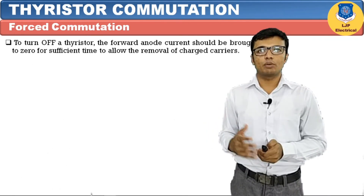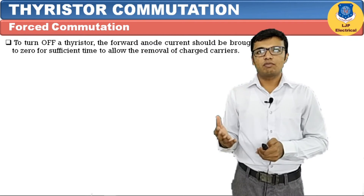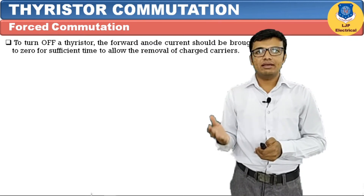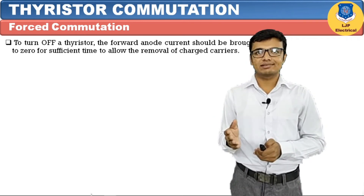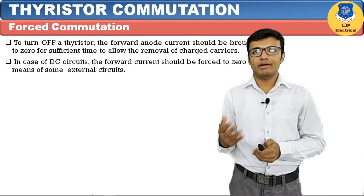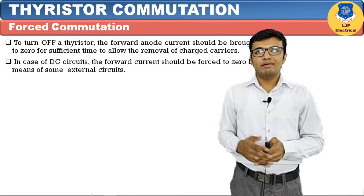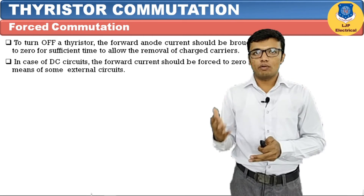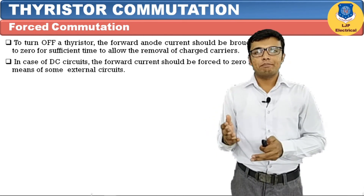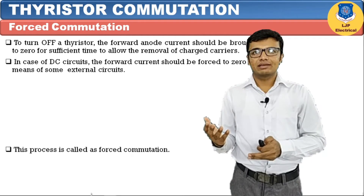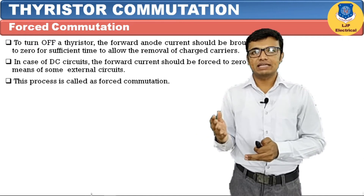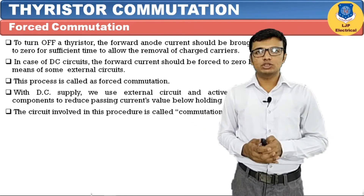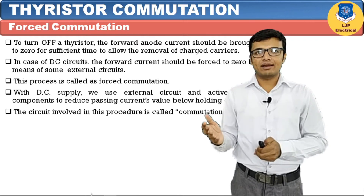In forced commutation, to turn off the thyristor the forward anode current should be brought to zero for a sufficient time duration to allow removal of charge carriers. In the case of a DC circuit, the forward current must be forced to zero by providing some external pulse. The circuit which provides this external pulse is called the forced commutation circuit, which is why this process is called forced commutation.